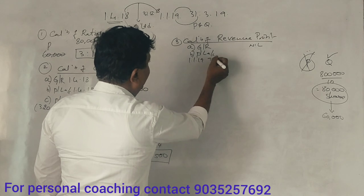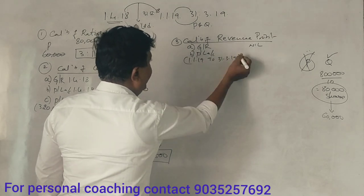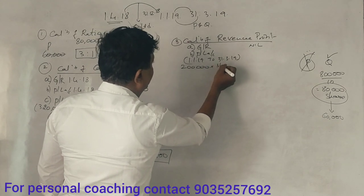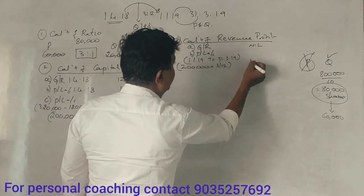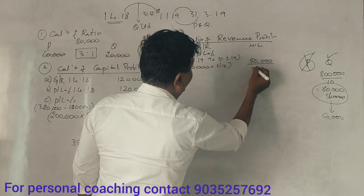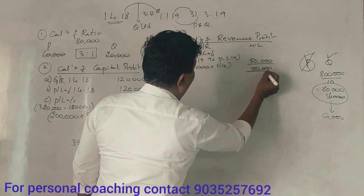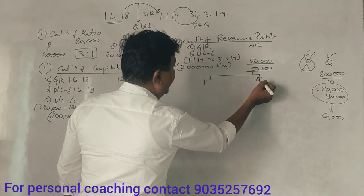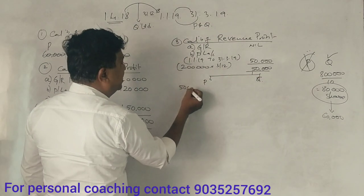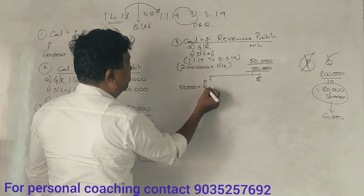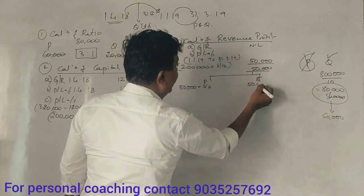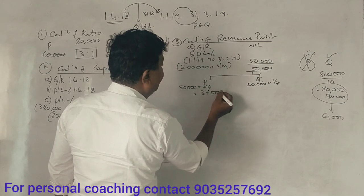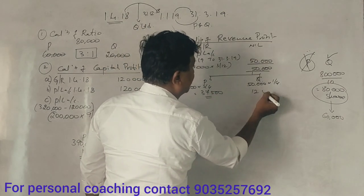In 31st March 2019, three months' profit: on two lakhs, three by twelve is fifty thousand rupees — the revenue profit. So fifty thousand into four by three is... fifty thousand into one by four is thirty-seven thousand five hundred; and twelve thousand five hundred.